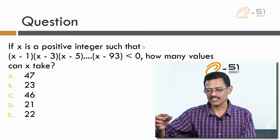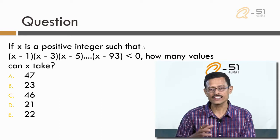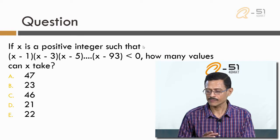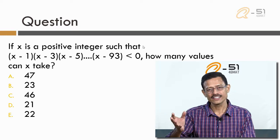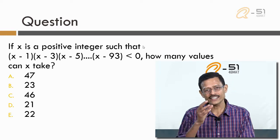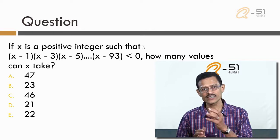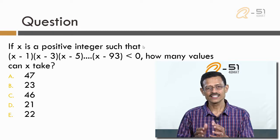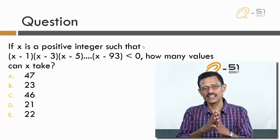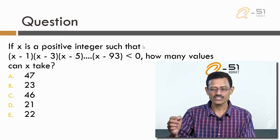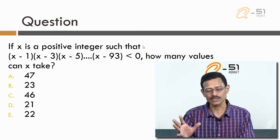Before I delve into the question, I just want to take a sneak peek at the answer choices. The numbers given are something like 47 and 23, so it is quite evident that the number of values that x can take is a finite set — not a large number, actually a very meaningfully small number.